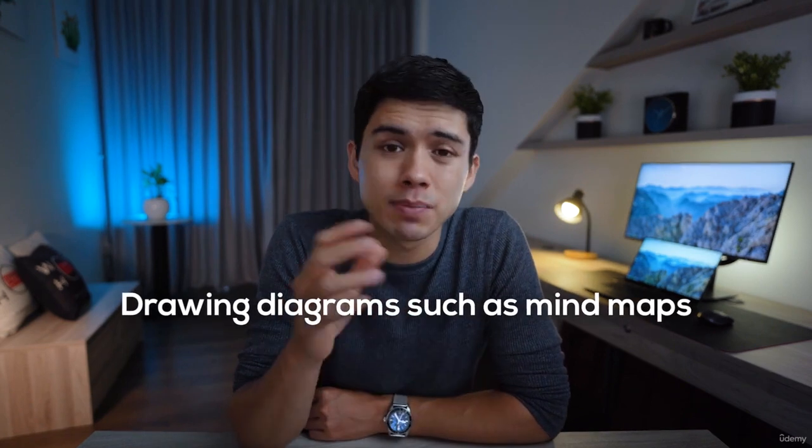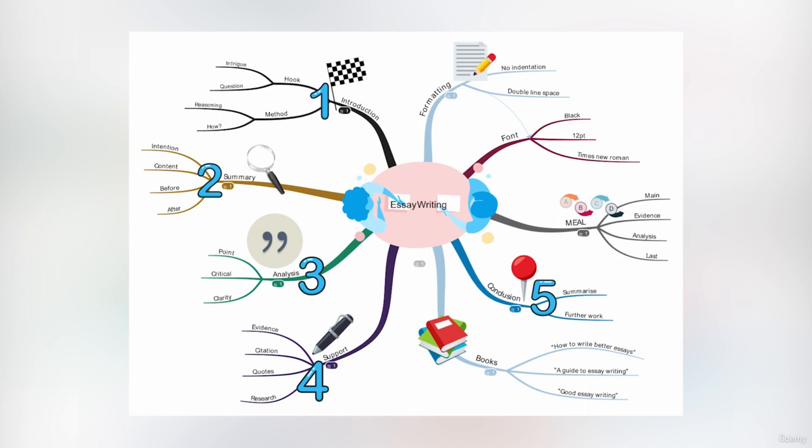A final way of using advanced information processing to activate your brain when studying is by drawing diagrams such as mind maps. I didn't use this technique much as I'm not much of a visual learner, but I had friends at university that swore by it. A mind map is a visual diagram of a collection of ideas or information — sometimes referred to as a spider diagram. Imagine the title is the center of the page as the spider's body, and all the ideas sprouting from the body are the spider's legs. The information that branches off from the center is all related to or associated with the title.